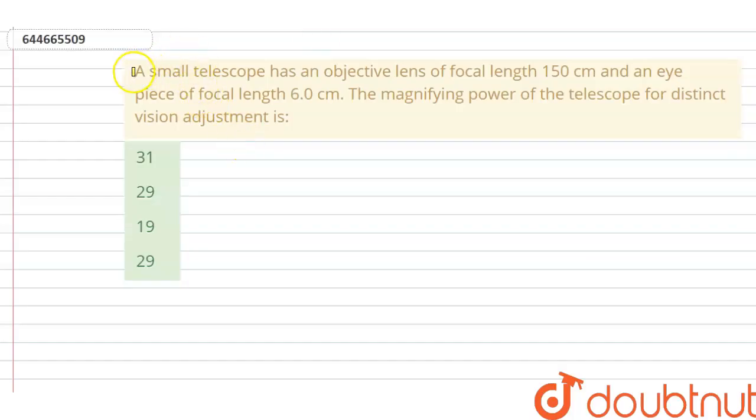Hello students, our question is a small telescope has an objective lens of focal length 150 cm and an eye piece of focal length 6 cm. The magnifying power of the telescope for distinct vision adjustment is.